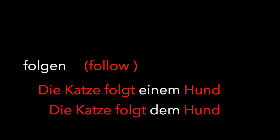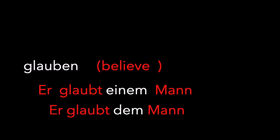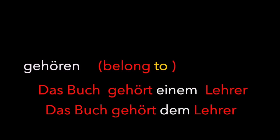Folgen is another example — the cat follows a dog: Die Katze folgt einem Hund. And the cat follows the dog: Die Katze folgt dem Hund. Er glaubt einem Mann — he believes a man. And he believes the man: Er glaubt dem Mann. We also have gehören — belong to — which needs the Dativ. The book belongs to a teacher: Das Buch gehört einem Lehrer. And the book belongs to the teacher: Das Buch gehört dem Lehrer.